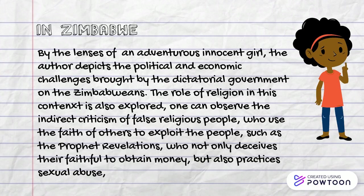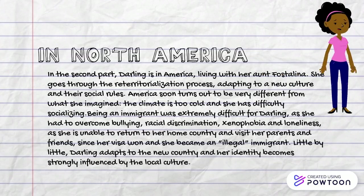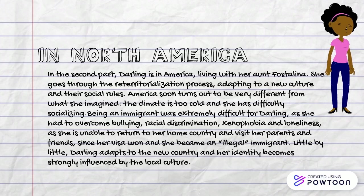There is a specific character who is a victim of this prophet. It's very interesting — it gives us a glance of part of this reality. In North America, we can see grown-up Darling. She moves there to live with her aunt and she goes through a lot of new adaptations, adapting to that new culture and new social rules.